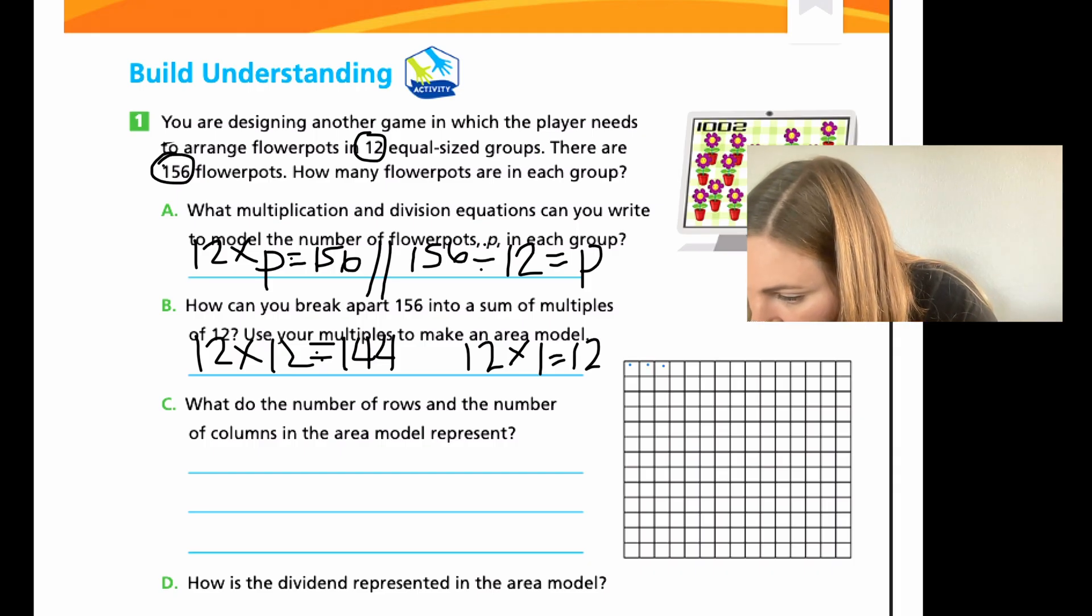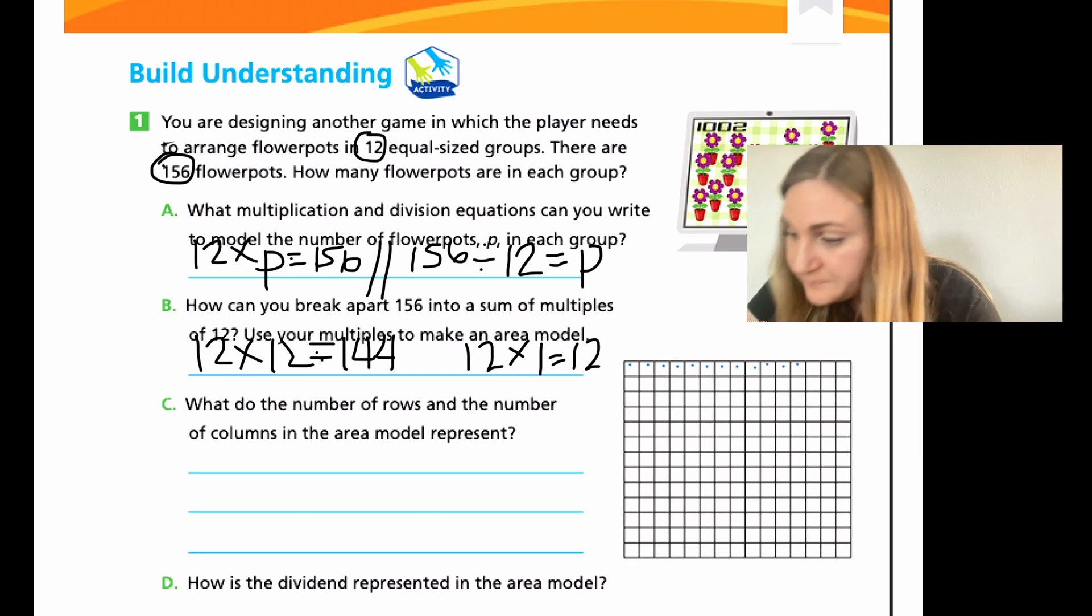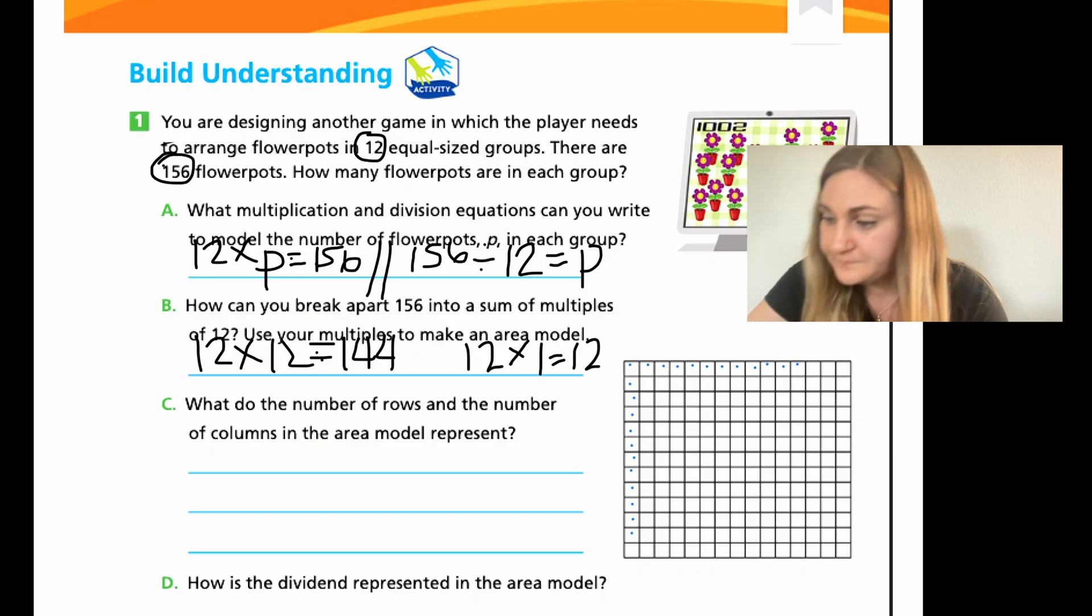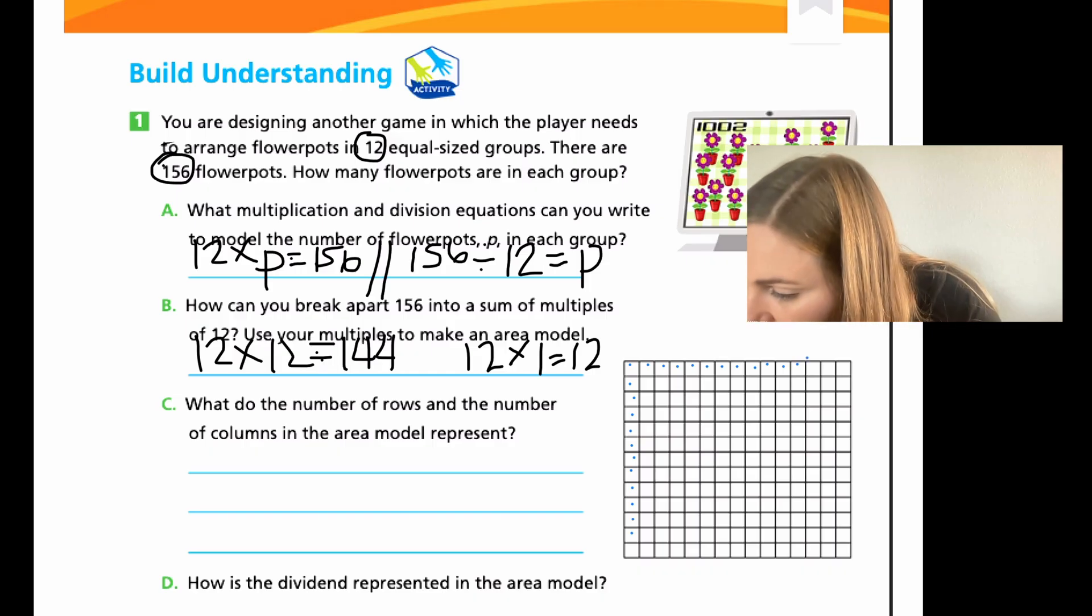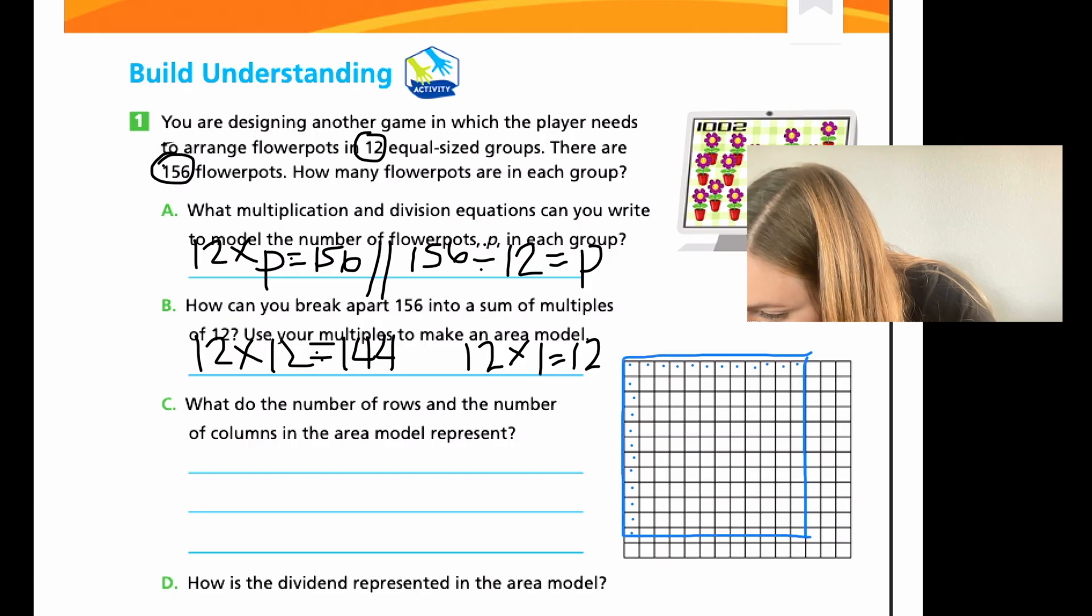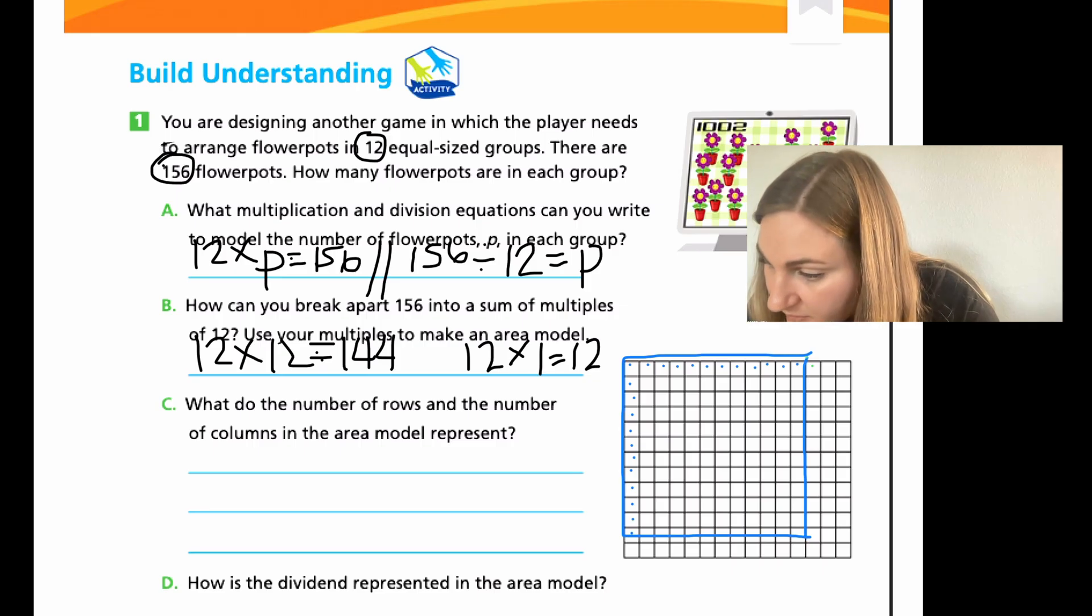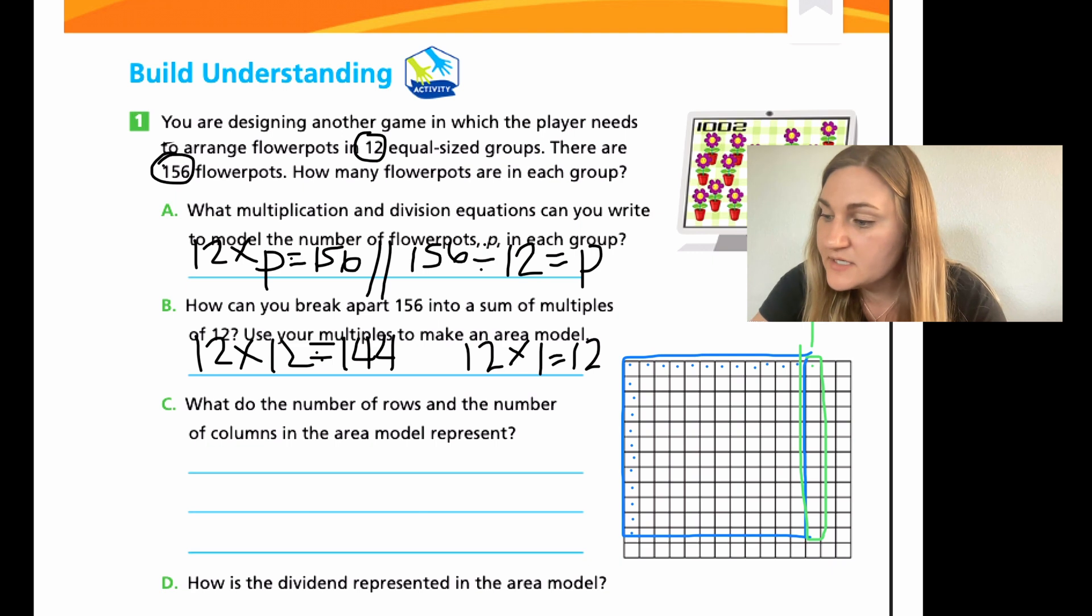All right. And so, if you're using your area model over to the right, I'm just going to go ahead and use different colors. I'm going to do blue as my first one. So, the 12 times 12. So, I'm going to do 1, 2, 3, 4, 5, 6, 7, 8, 9, 10, 11, 12. And then by that group of 12 is 1, 2, 3, 4, 5, 6, 7, 8, 9, 10, 11, 12. All right. So, let me go ahead and trace this out. This 12 by 12 that I showed in my multiplication problem. And if I go to green, I just have that 1. So, it's going to be this 1 by 12 here.